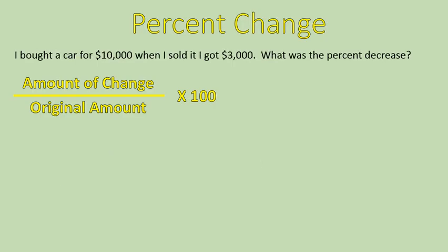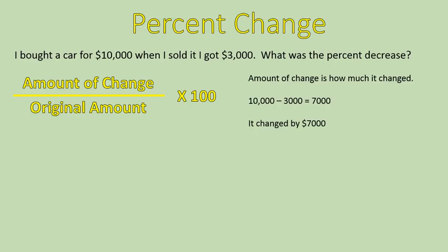With this next question, it's going to be a little bit more complicated. I bought a car for $10,000. When I sold it, I got $3,000. What was the percent decrease? With this one, we're told the original amount — it started at $10,000 — but we are not told how much it changes. We are told $10,000 and I sold it for $3,000, but we are not told what the change is. So we have to do one extra step. When they don't give you how much it changes, you have to calculate that. It changed from $10,000 down to $3,000, so it changed by $7,000.